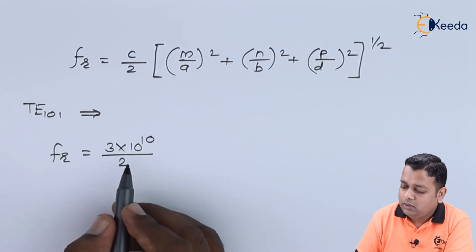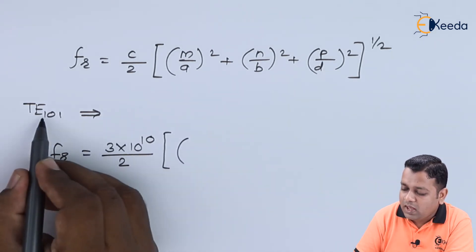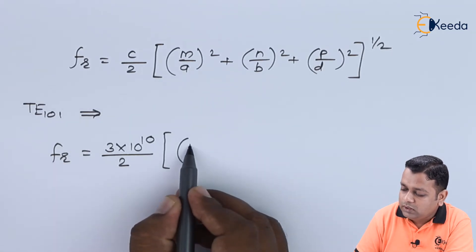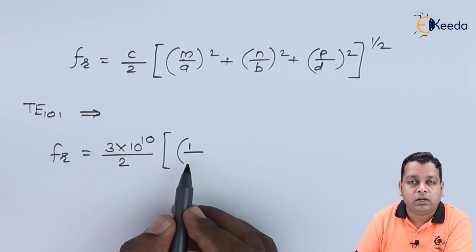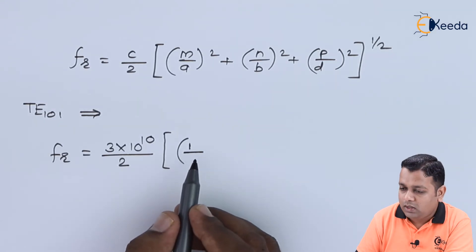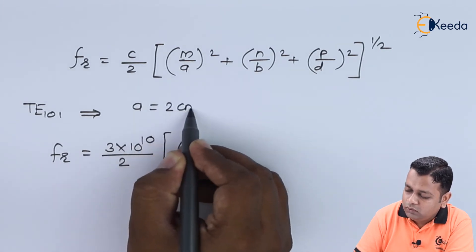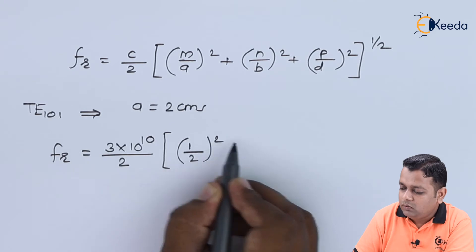Inside the square bracket, as it is TE subscript 1, the first subscript m is substituted as 1, divided by small a. The value of a in centimeters is 2 centimeters, so 1 divided by 2, which is to be squared.